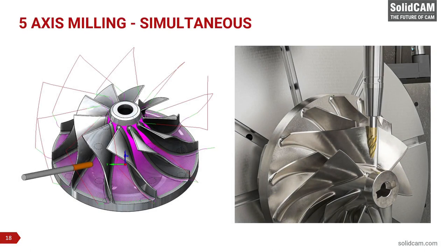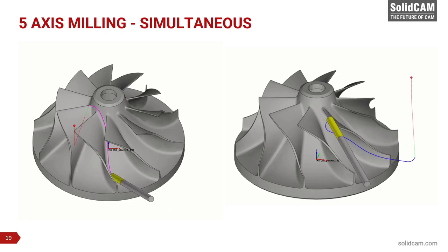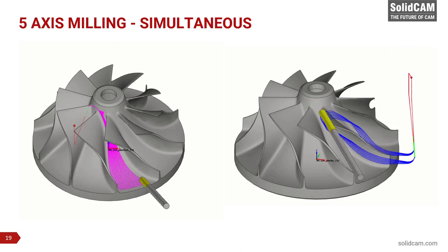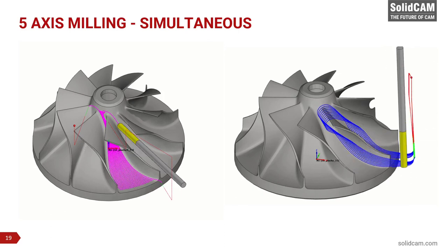5-axis simultaneous, on the other hand, can machine using all 5 axes at the same time in a single controlled movement. Shapes that would otherwise be difficult to machine can be cut with ultimate speed and precision. The impeller is the perfect example, being a very complex shape that uses the 5-axis simultaneous method. We can see that the tool vector is constantly moving and changes at every step of the toolpath. This motion is necessary to avoid collisions with the impeller blades and to cut features not visible when viewing the impeller from above.